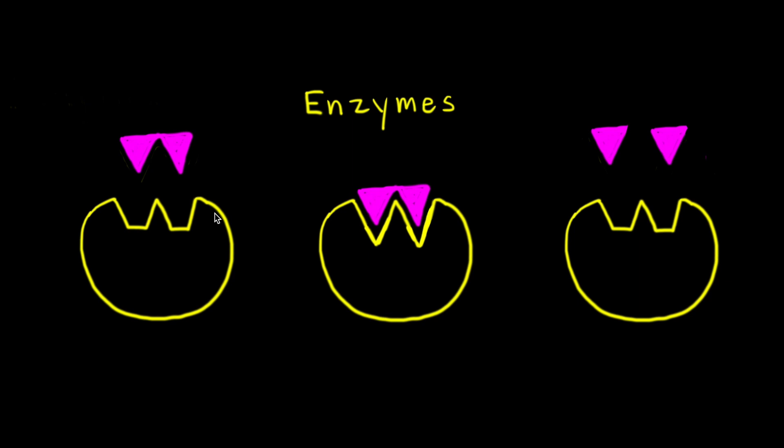A catalyst speeds up a reaction by lowering the activation energy. There are many types of catalysts. First we're gonna look at enzymes, which are biological catalysts.